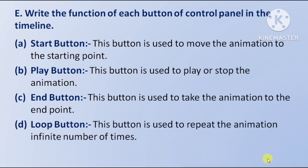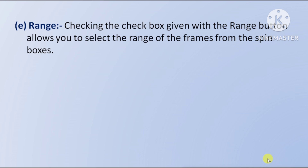Loop button: This button is used to repeat the animation an infinite number of times. Range: Checking the checkbox given with the range button allows you to select the range of frames from the spin boxes — range button ke saath diye gaye checkbox ko check karne se aap spin box se frames ki range ko select kar sakte hain.